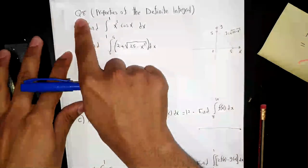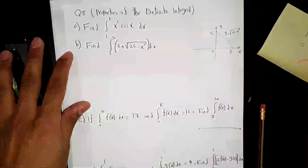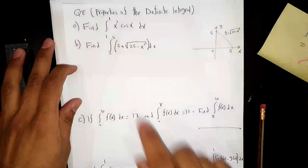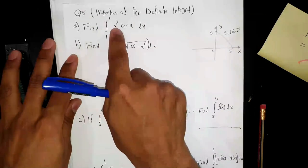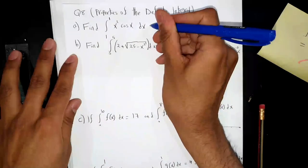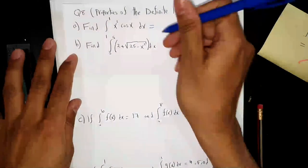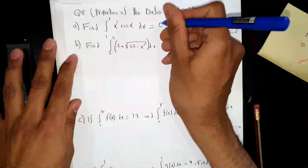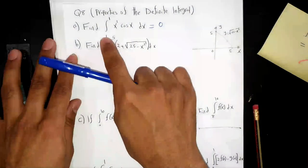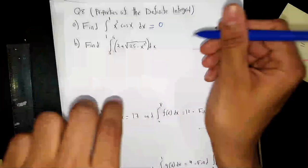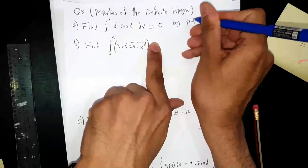Question 8: applying properties of definite integrals. Part A: find ∫₁¹ x²cos(x) dx. The answer is directly 0 by Property 2, because integrating any continuous function from a to itself gives zero.